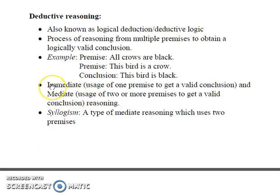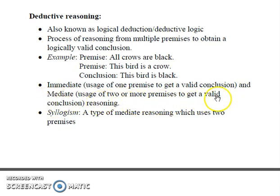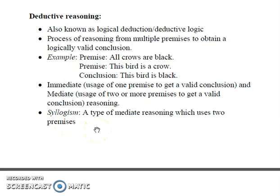Deductive reasoning can be of two types: immediate, in which only one premise is used to get a valid conclusion, and mediate, in which two or more than two premises give a valid conclusion. Syllogism is a type of mediate reasoning which uses two premises only to obtain a valid conclusion. Syllogism is quite important from an exam's point of view as many questions are asked from this topic.